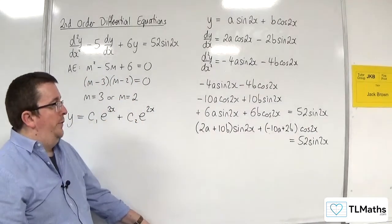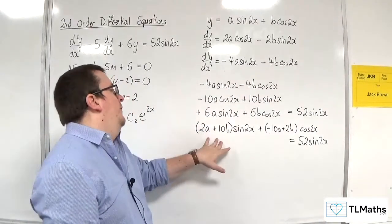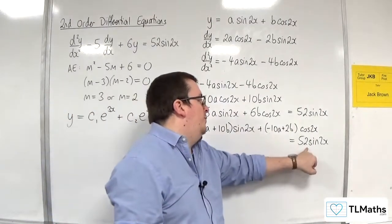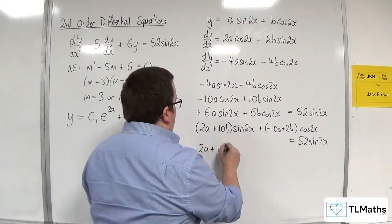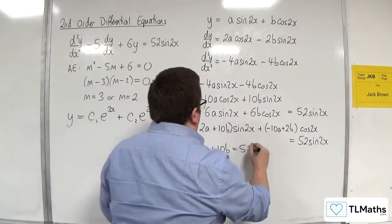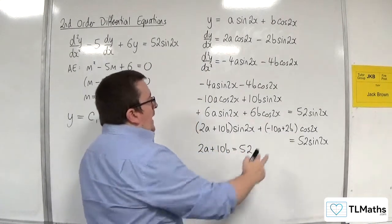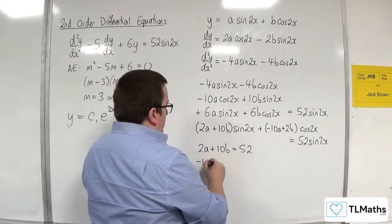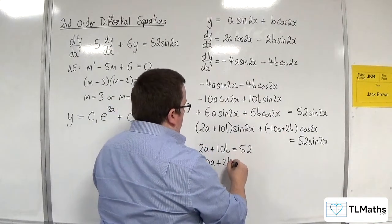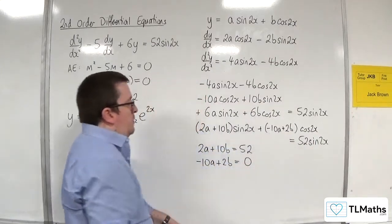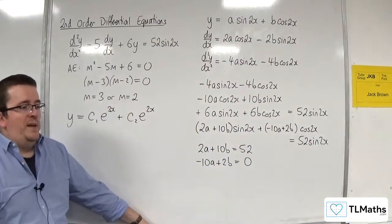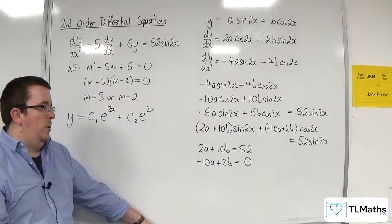So, comparing coefficients, the value in front of the sine of 2x on the left-hand side has got to be the same as the one on the right-hand side. So, we have 2a plus 10b has got to be equal to 52. And minus 10a plus 2b. Well, there's no cosine of 2x's on the right-hand side. So, that's got to be equal to 0. So, we now have to solve these simultaneous equations.